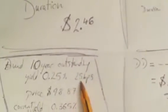or the price volatility we're going to see, given an up or down move of 25 basis points in yield.